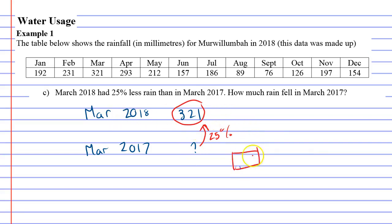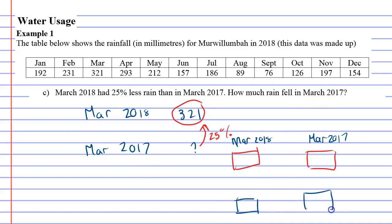So four boxes — one column represents March 2018 and the other one represents March 2017. In March 2018, there was 321 milliliters of rain. In March 2017, we do not know. What's happened is there's 25% less rain in 2018.